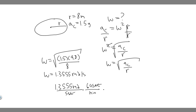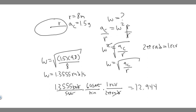Now we convert from radians into revolutions. Since there are 2π radians per revolution, we divide by 2π radians, which cancels the radians and leaves revolutions per minute. So we compute 1.3555 times 60 divided by 2π, which gives approximately 12.944 — about 12.94 revolutions per minute.